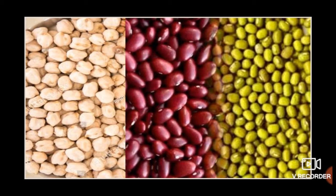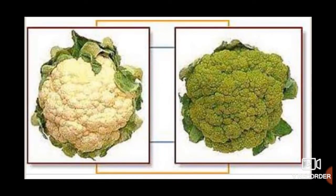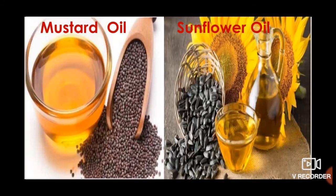Do you know kids? The edible part of some fruits and seeds are eaten as nuts. Cashew nut, almonds and walnut are some common nuts. Sunflowers store food. Broccoli and cauliflower are some flowers we eat.